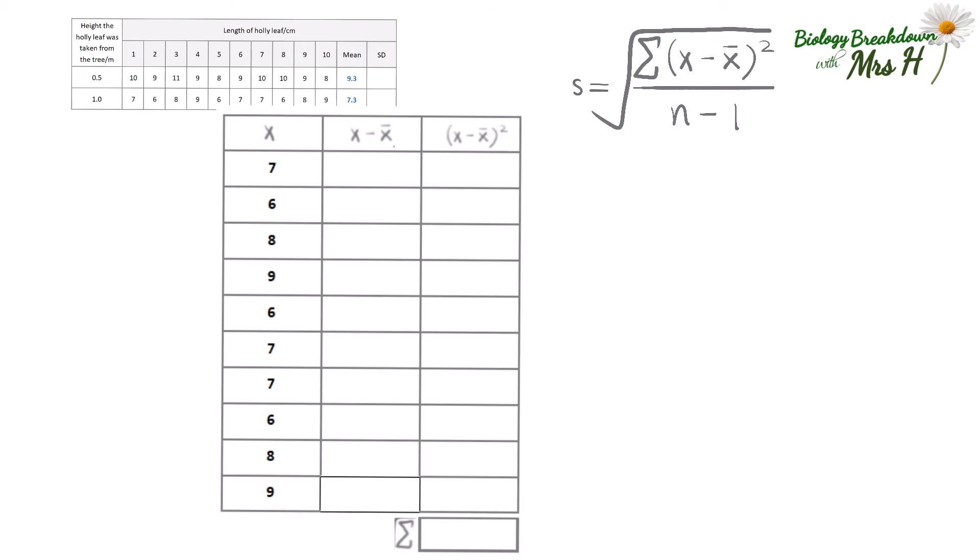We may as well calculate the standard deviation of the lengths of leaves measured at 1m high on Holly tree. So at 0.5m the standard deviation was 0.95. Let's use the substitution method again. The values have been put into the X column as you can see. Following the same procedure as before you can work out X minus the mean and this time the mean is 7.3. Then complete the X minus the mean squared column and find the sum of which is 10.41169.